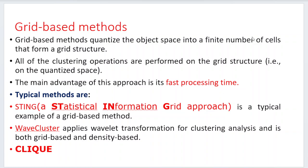Grid-based methods divide the entire object space into a finite number of cells forming a grid structure with rows and columns. All clustering operations are performed on this grid structure. The main advantage is fast processing time. Typical methods include STING (a statistical information grid approach), WaveCluster, and CLIQUE.